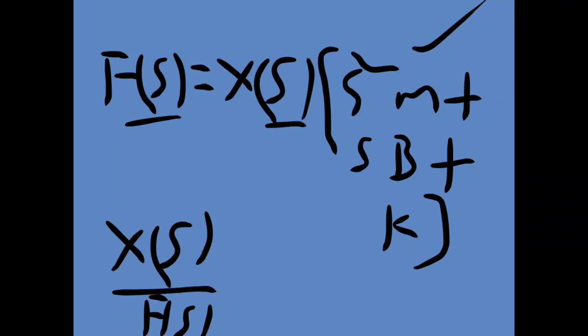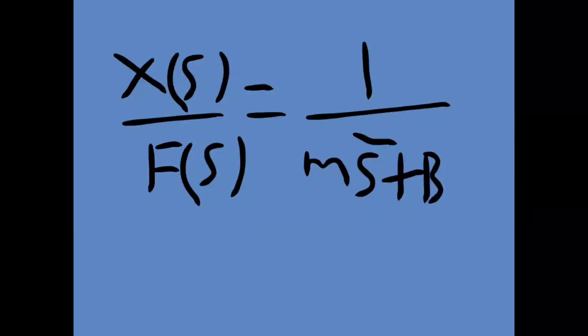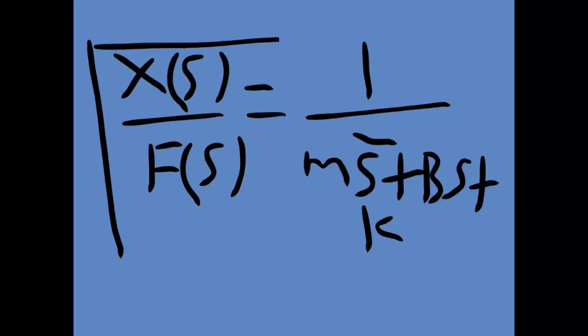Ms² plus Bs plus K. 1 by ms² plus bs plus k is the required transfer function for the given translational model.